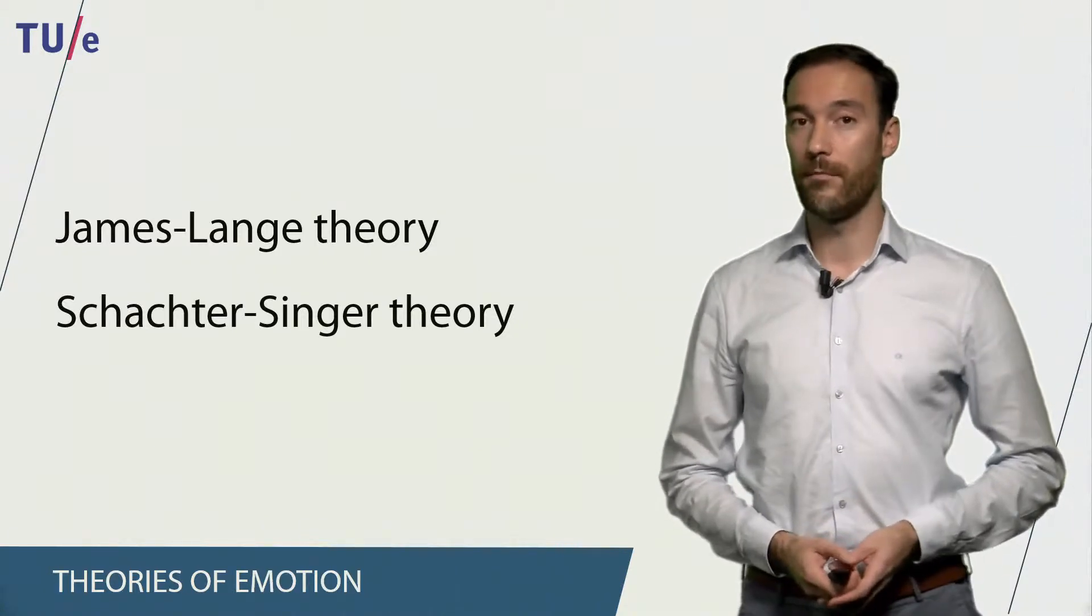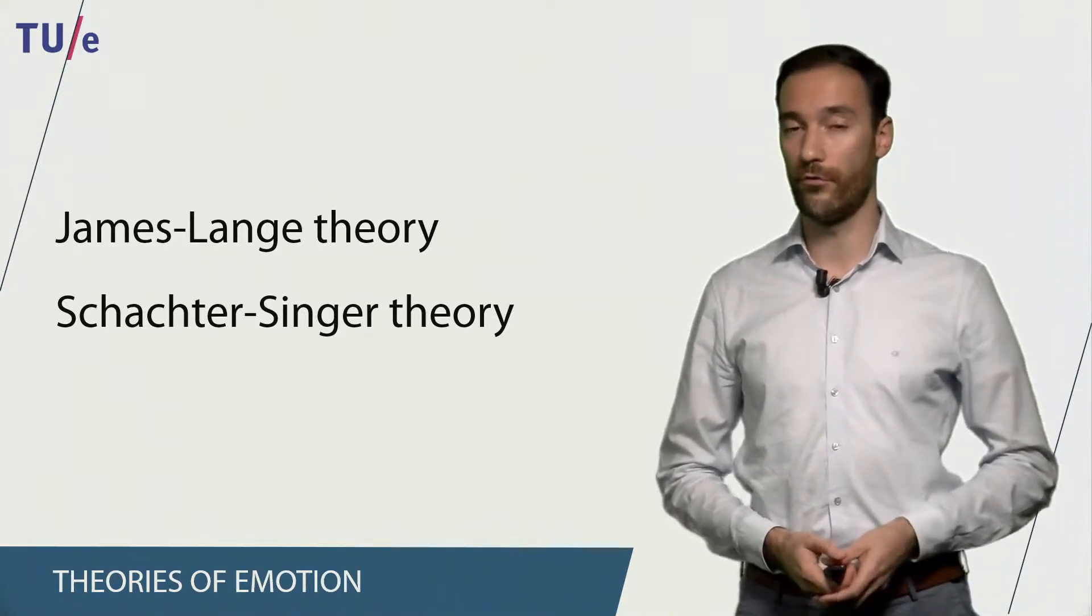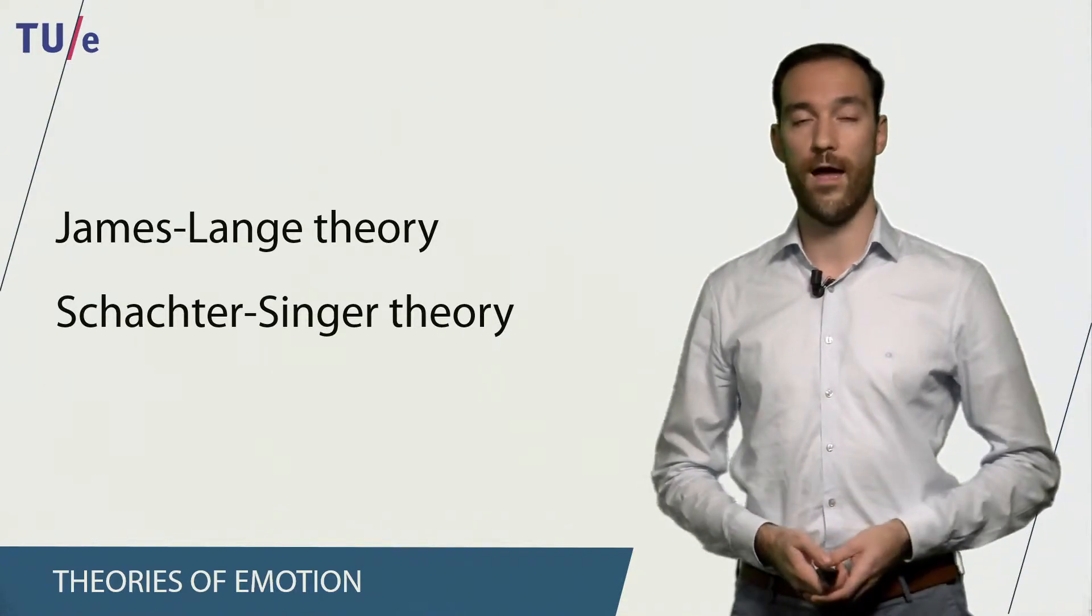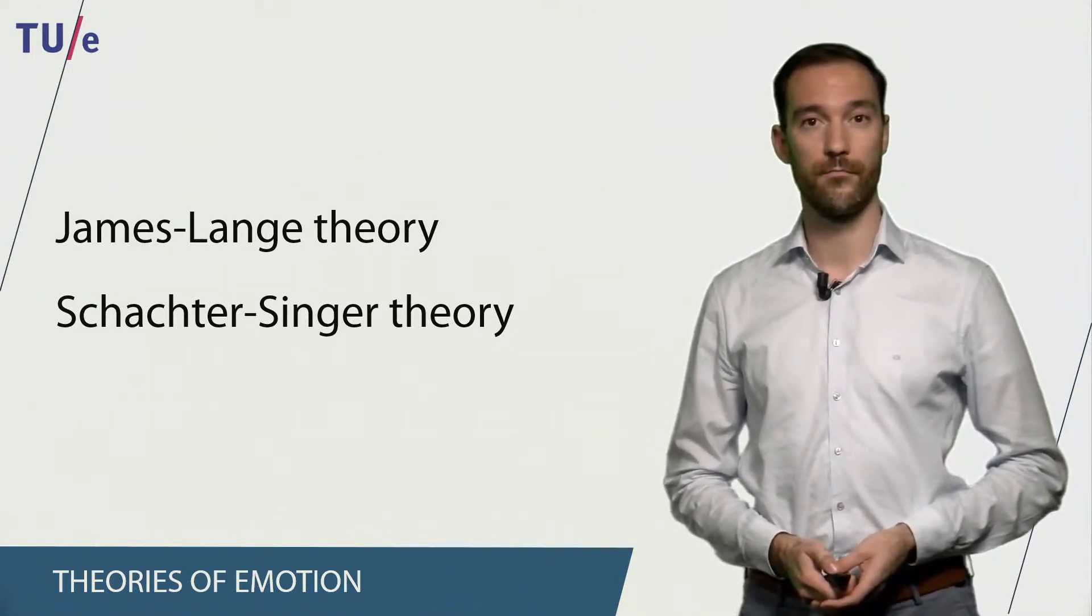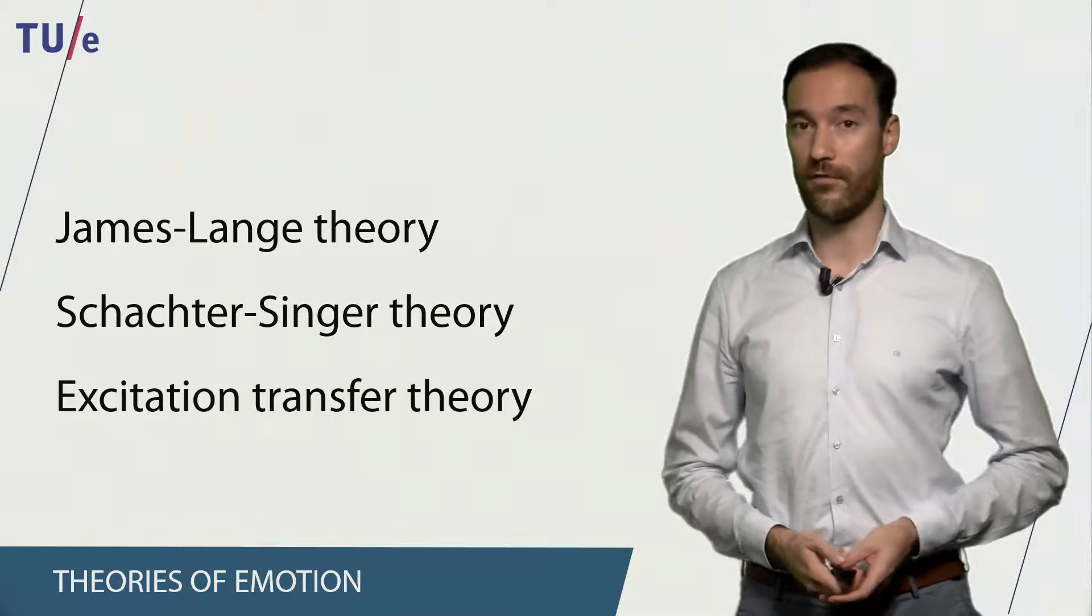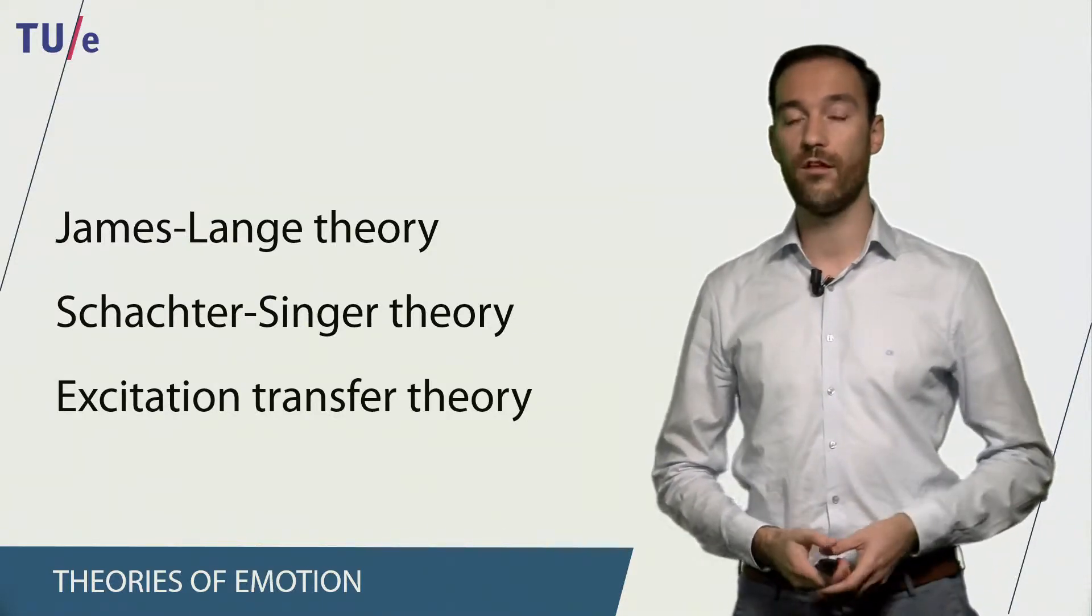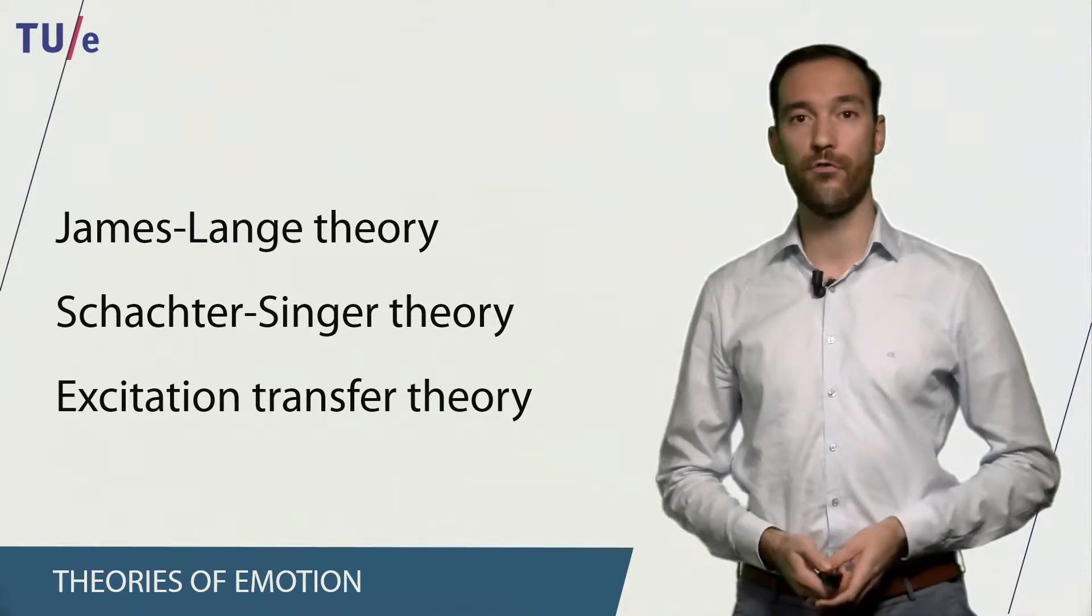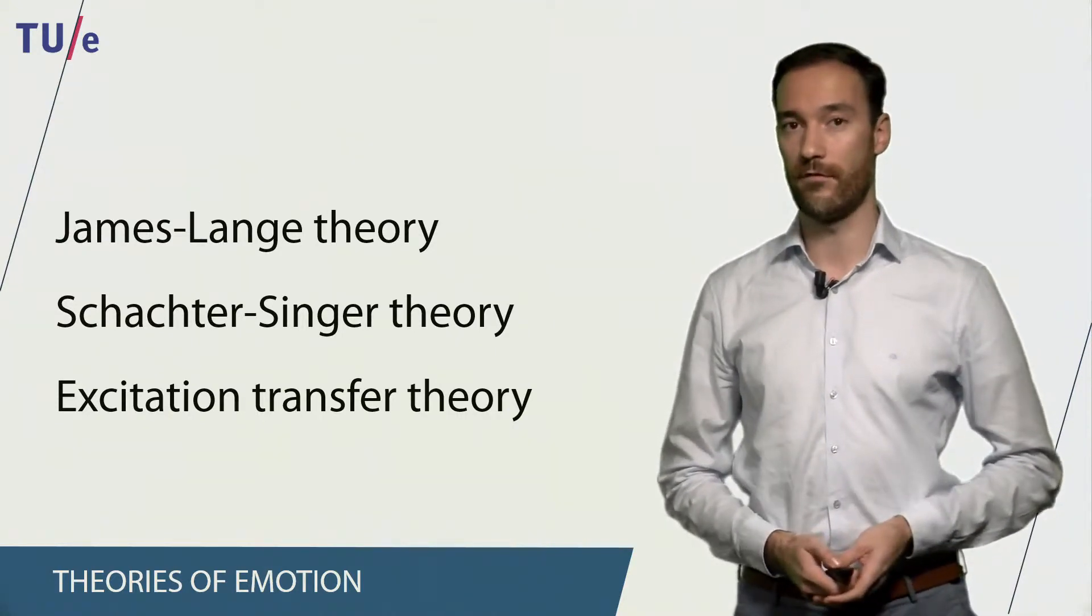The Schachter-Singer theory states that when we encounter an emotional stimulus, two processes happen at the same time after which we have an emotional experience. And the excitation transfer theory shows that when we have an increased physiological arousal, this may influence our emotional experience in a future event.